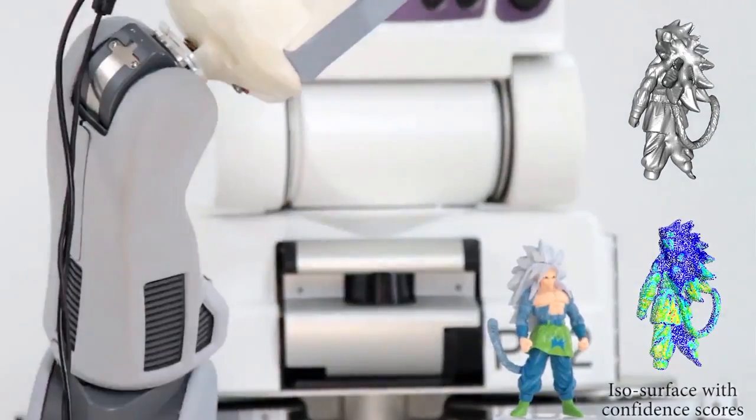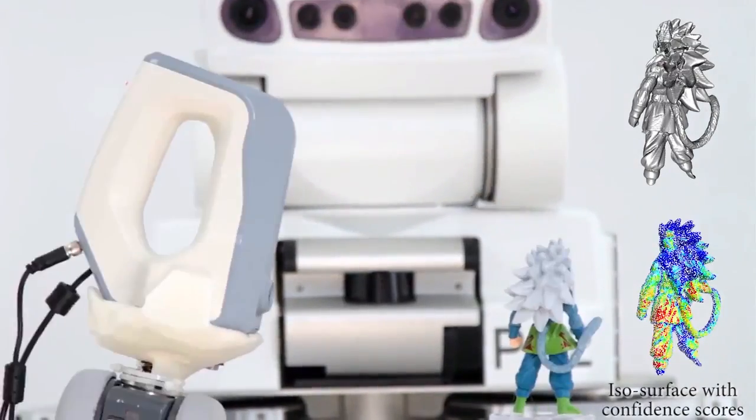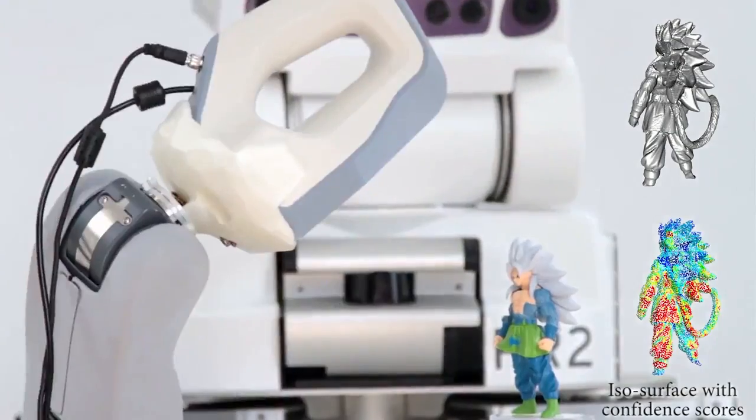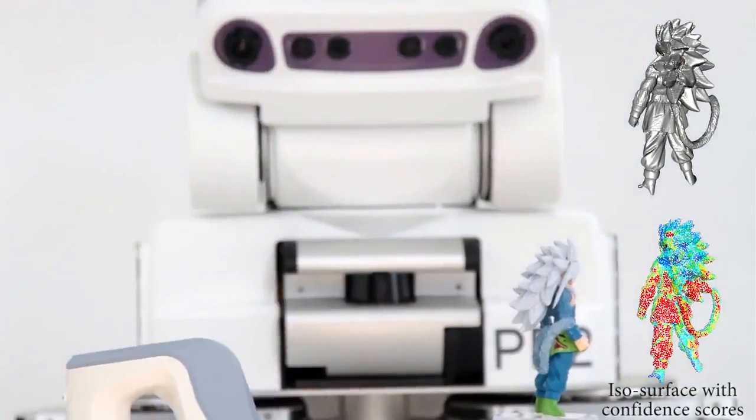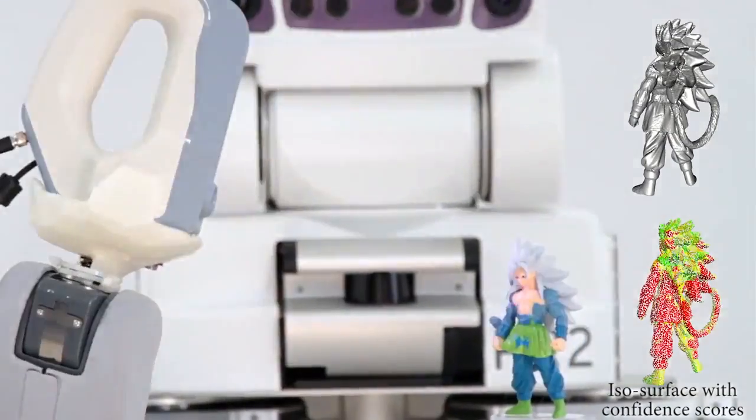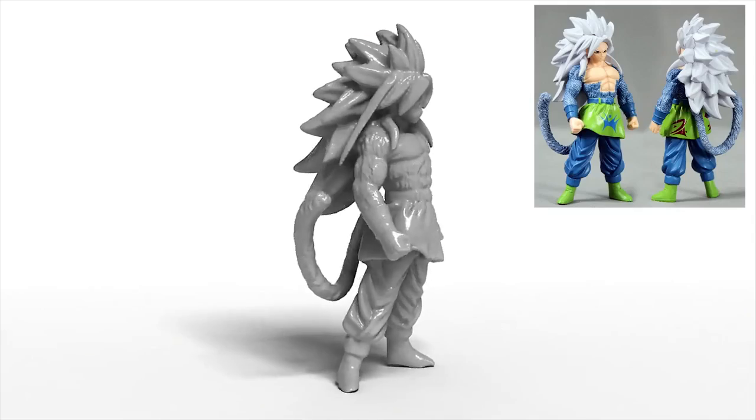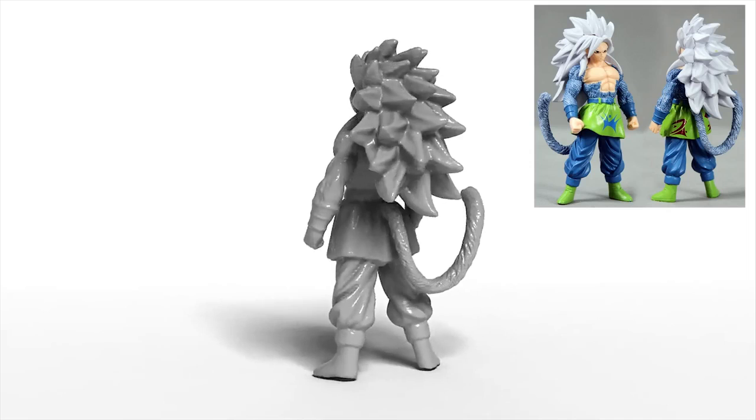Blindly scanning a complex object often causes missing parts and losing details. Through globally evaluating the confidence of the iterative watertight isosurface, we can accurately detect such low quality areas and apply additional scans. The final reconstruction is faithful to the original object.